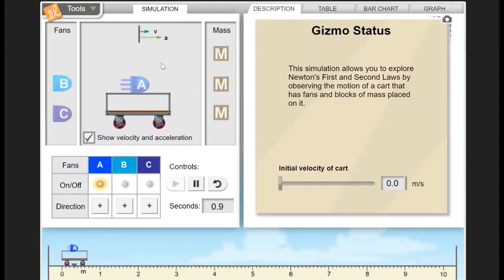You can also start the cart with an initial speed. So here it says that we're at zero, but the initial velocity of the cart can be changed. So then when I give it a push, it's already moving by the time we get that force from the fans.